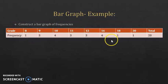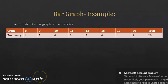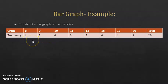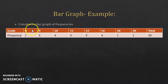You have the grades and the frequency, and the question is to construct a bar graph of frequencies. Now pause the video and try to construct the bar graph by yourself. First, choose a convenient scale for the y-axis. Notice the frequencies are 1, 3, and 4 only, so 1 unit on the y-axis should correspond to a frequency of 1. For the x-axis, there is no scale — just put the grades in increasing order: 8, 9, 10, 11, 12, 16, 18, and 20.